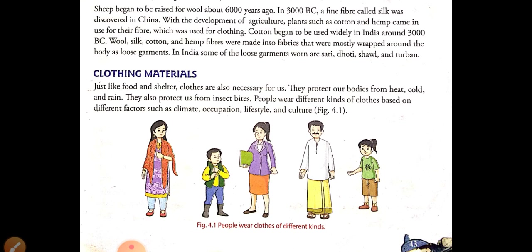Just like food and shelter, clothes are also necessary for us. Clothes protect us from heat, cold, rain, and insect bites. People wear different types of clothes based on different climates. In cold climates like America, people wear woolen clothes and jackets. In India, we have all seasons, so we wear cotton clothes in summer and woolen clothes in winter.